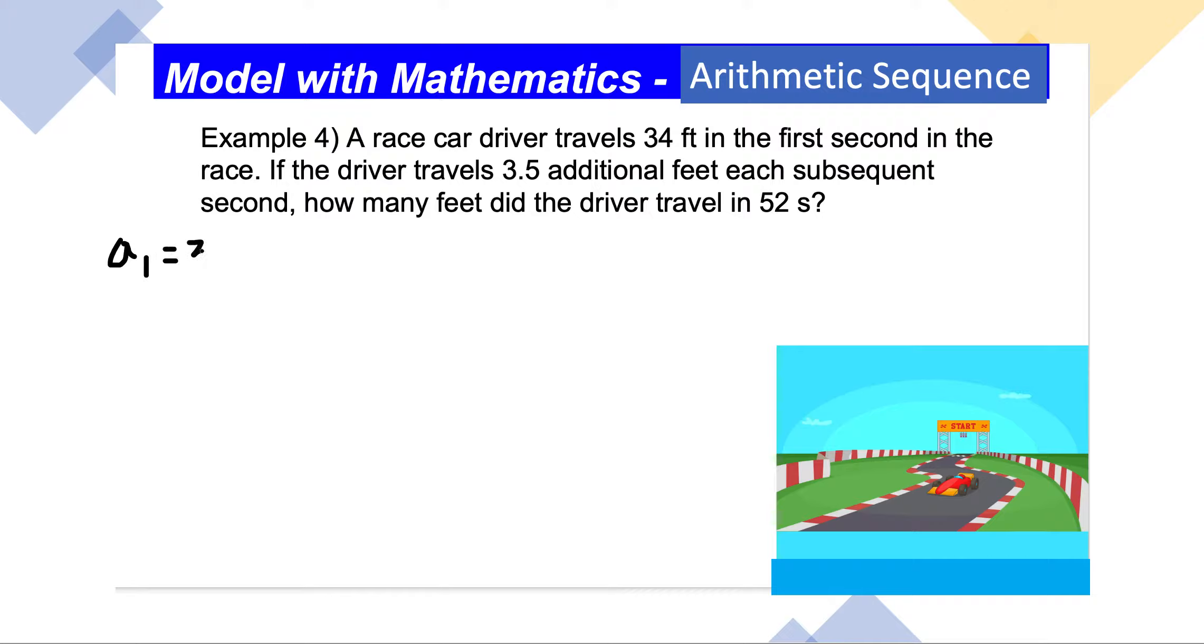This is the first term of the arithmetic sequence. We know this is an arithmetic sequence because every subsequent second it travels 3.5 additional feet, which means the distance increase is constant.